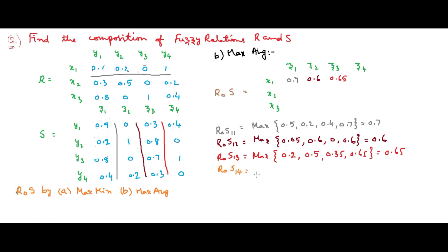Next is R∘S(1,4), which is x1 and z4. Average of 0.1 and 0.4 is 0.25. Computing the remaining averages, the maximum value is 0.5.